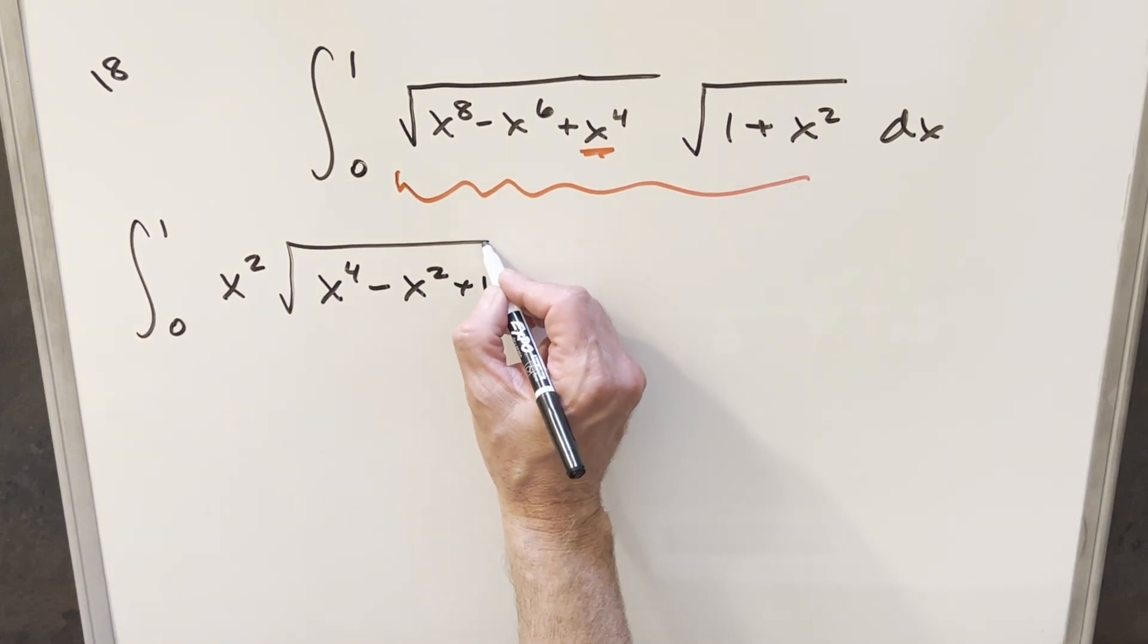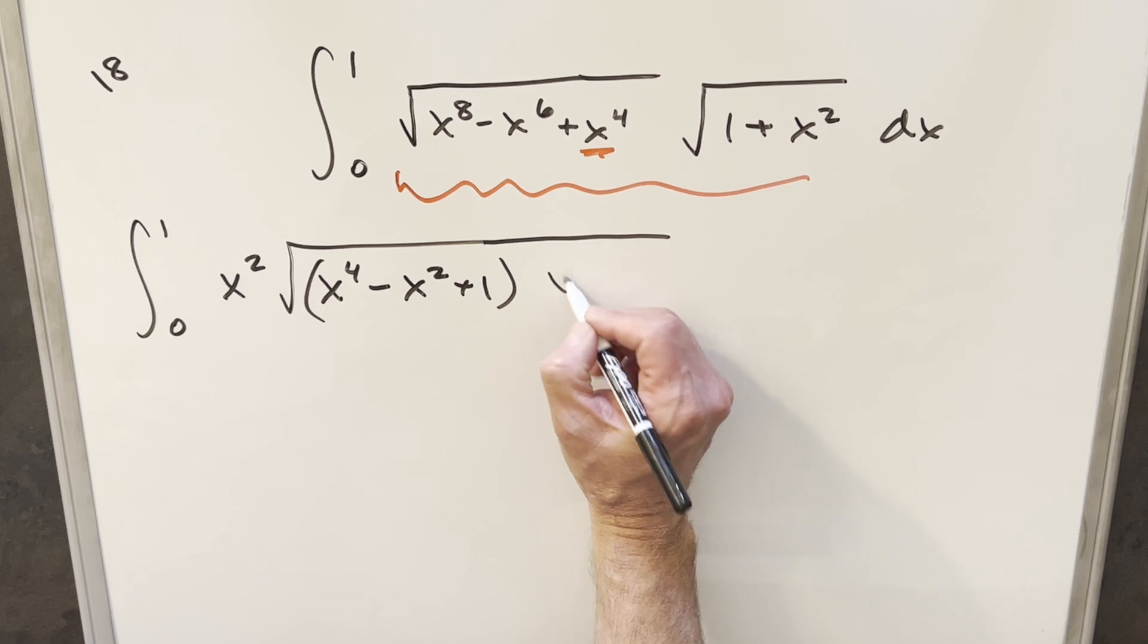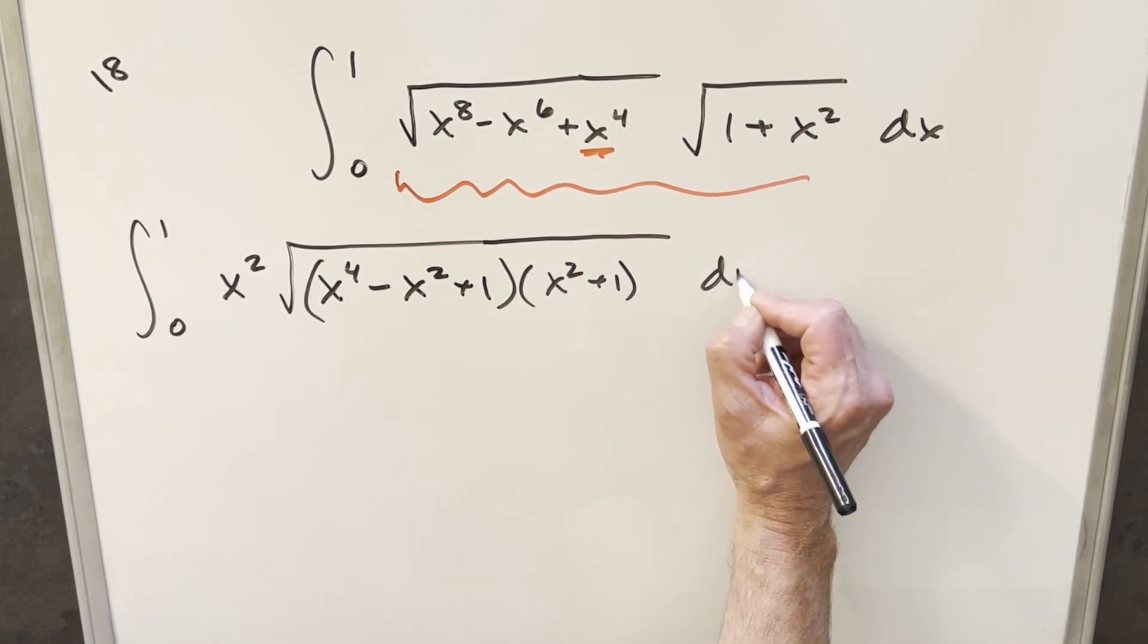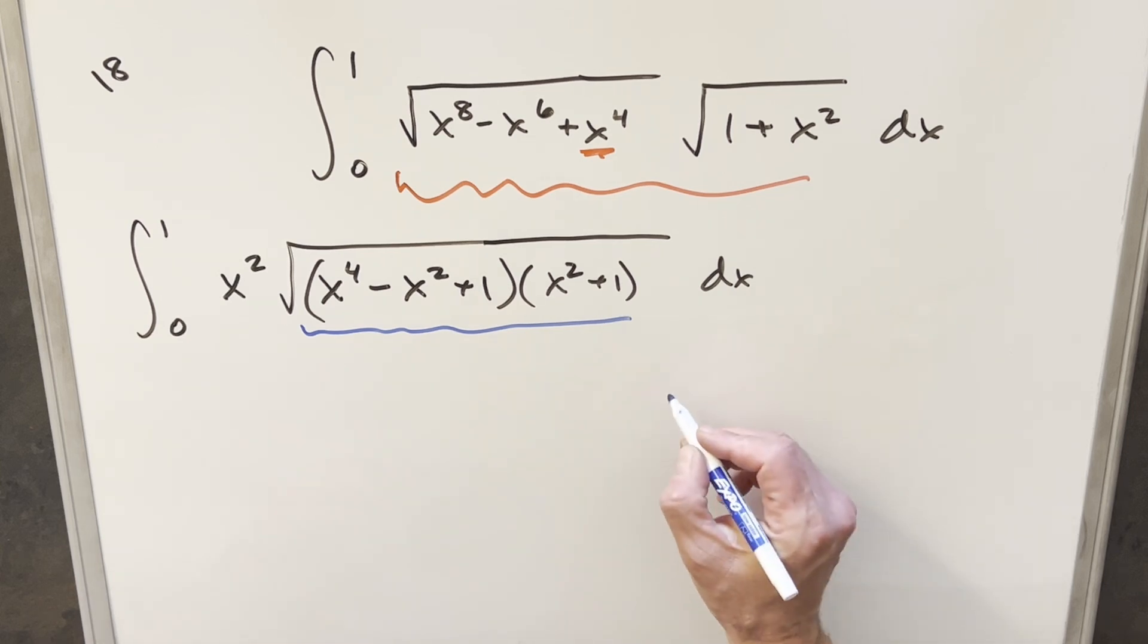And I think what I'll do with this is actually let's just bring it all into one radical and write it like this. And I'm going to reorder it. I'll write this as x squared plus 1, just trying to set this thing up. For this, I'm actually thinking of the sum of cubes formula.